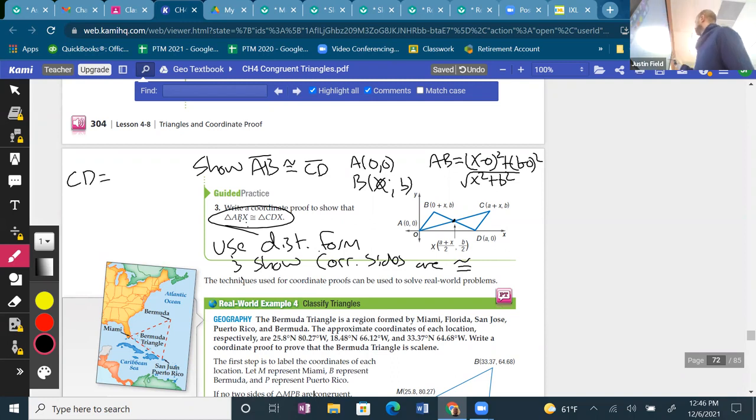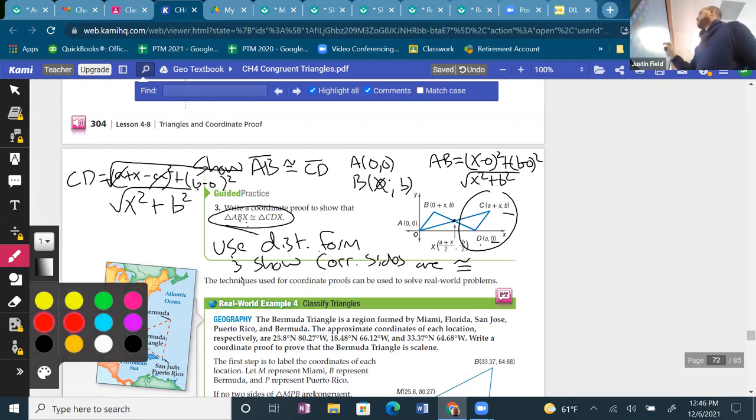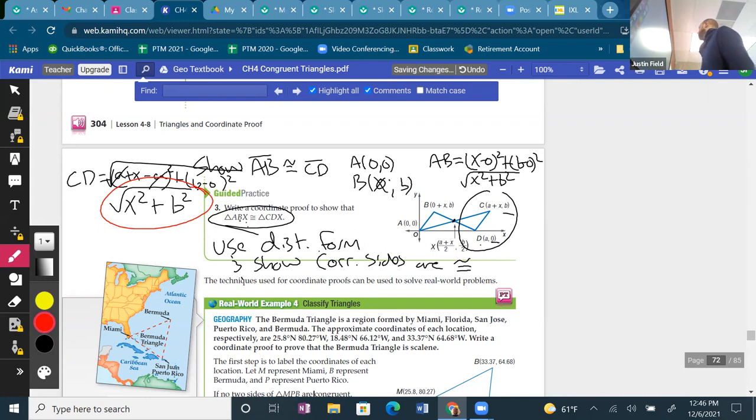And then what about CD? CD - A plus X minus A, that's X2 minus X1. Y2 minus Y1 is B minus 0. So it's A plus X minus A. Well, the A's cancel out. It would just be X squared. What's B minus 0? B. And lo and behold, I have the square root of X squared plus B squared. And AB is also the square root of X squared plus B squared. Weird things, but the same thing. And so I know that AB is congruent to CD.